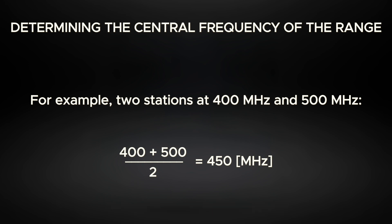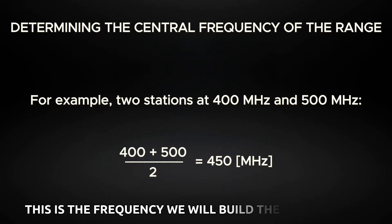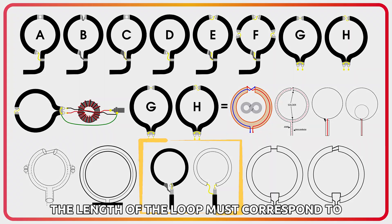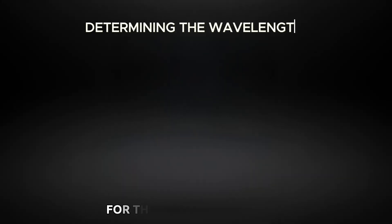We will make a loop antenna, simple and quite powerful. The length of the loop must correspond to the wavelength, so we need to calculate the wavelength for the central frequency.